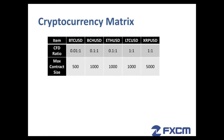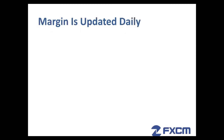Let's take a look at the cryptocurrency matrix. This indicates what the CFD ratio at FXCM is for Bitcoin, Bitcoin Cash, Ethereum, Litecoin, and Ripple. It also highlights the maximum contract size that one is able to trade.